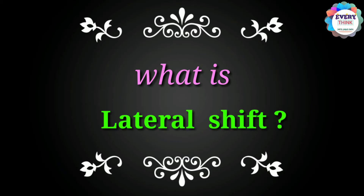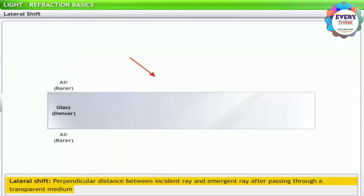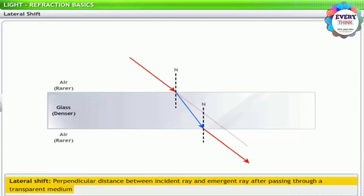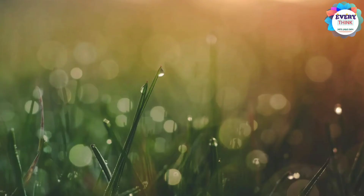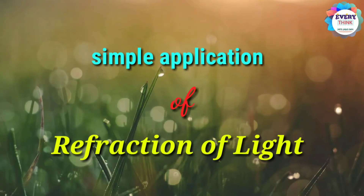What is lateral shift? When a ray is incident on the surface of a transparent medium such as glass, its position changes laterally when it comes out of the medium. This lateral displacement of the refracted ray is called a lateral shift.